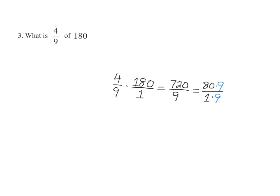Well 9 over 9 is equal to 1 therefore they cancel which leaves us with 80 over 1 which is the same as 80. Therefore 4 over 9 times 180 is equal to 80.